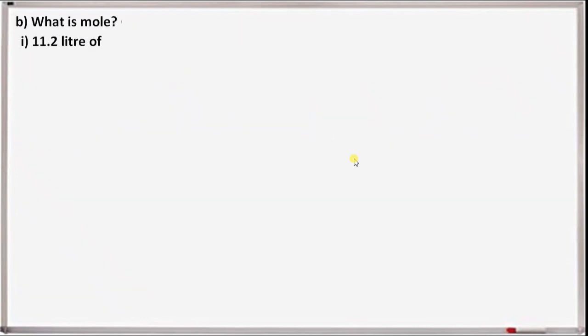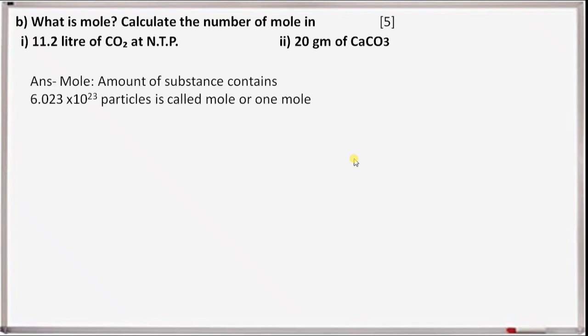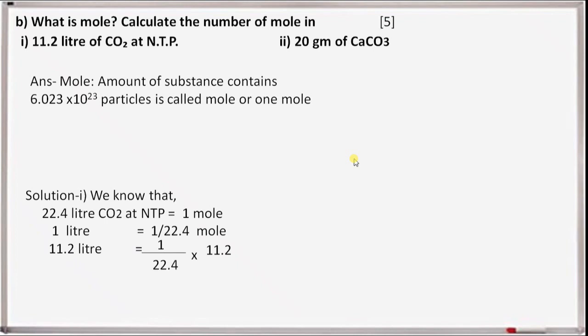Next question B: what is a mole? Calculate the number of moles in 11.2 liters of CO2 at NTP and 20 grams of calcium carbonate. A mole is the amount of substance that contains 6.023 × 10²³ particles. We know 22.4 liters of CO2 at NTP equals 1 mole, so 11.2 liters equals 1/22.4 into 11.2, which equals 0.5 moles.